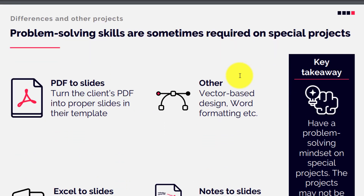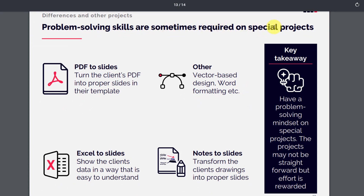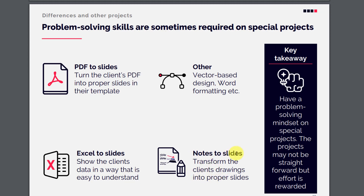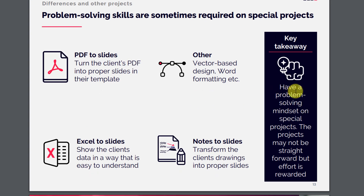The third type of project requires problem solving skills and differs from other projects. Some projects will have only PDF files that need to be converted to slides. Others will have Excel files from which you need to build PowerPoint presentations from scratch. There can also be handwritten drawings or notes from clients that you need to convert into full-fledged PowerPoint presentations. Other skills like vector-based design and word formatting may also be needed.